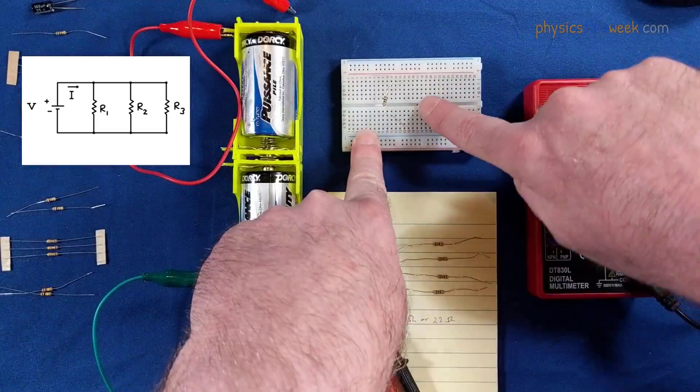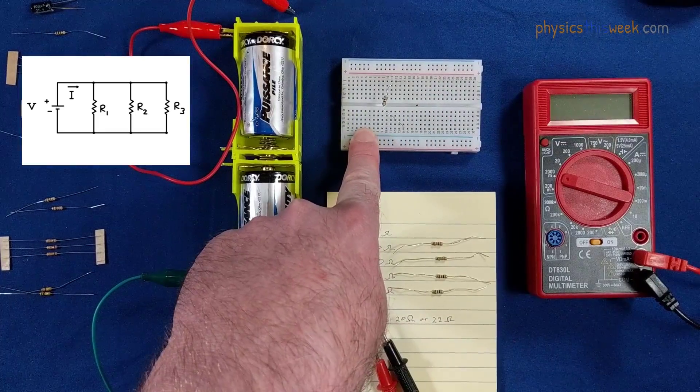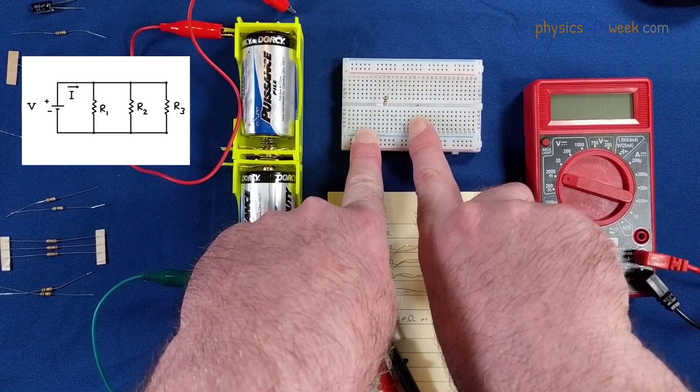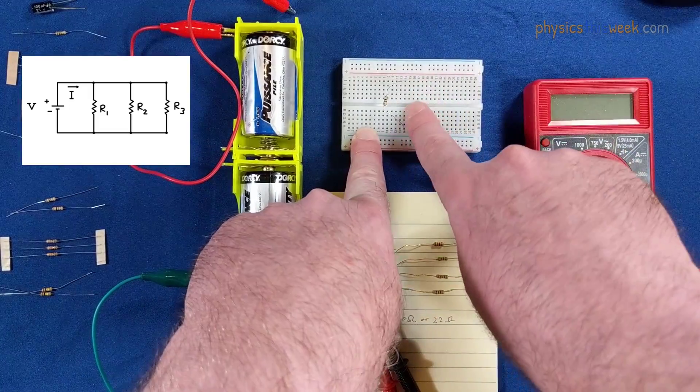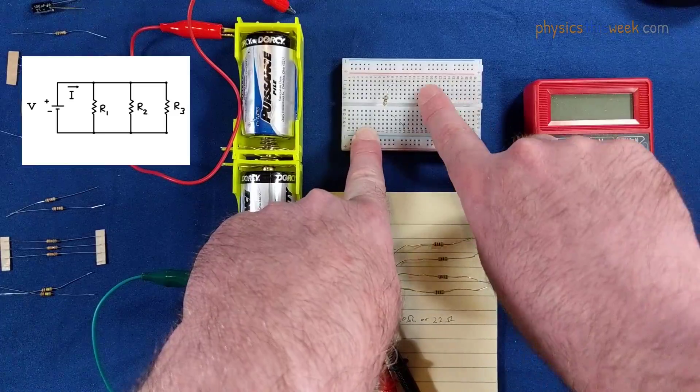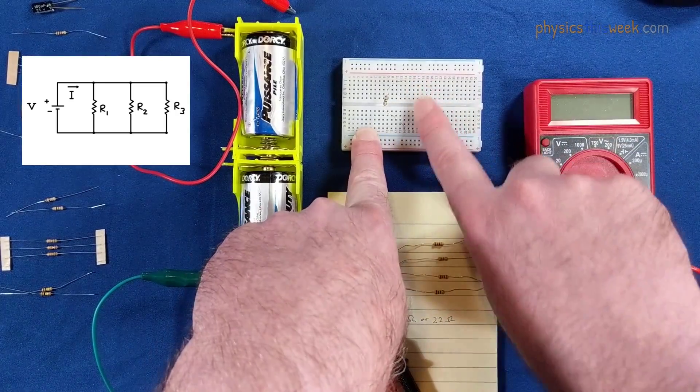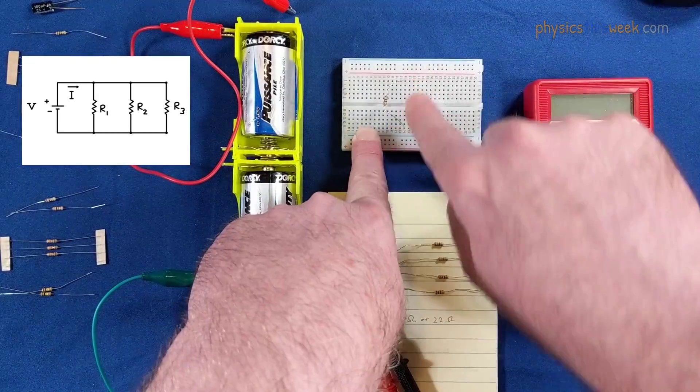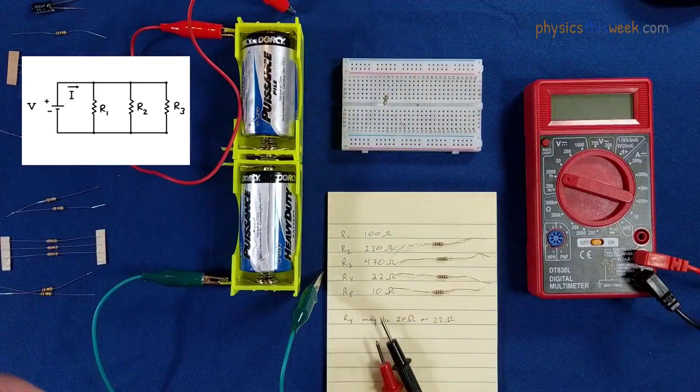Now row 14 on this side is not connected to row 14 on this side. There's no connection through the middle. But everything that's in row 14 is connected together on this side. Everything on this side is also connected together, but not across the central gap here.